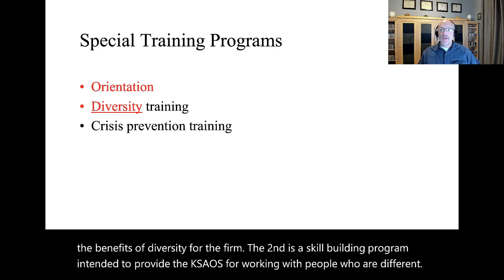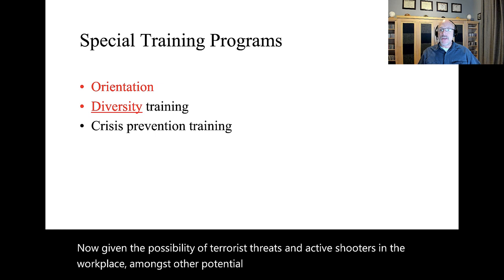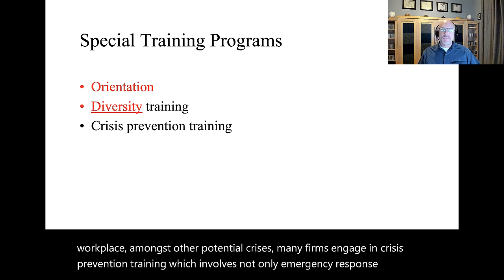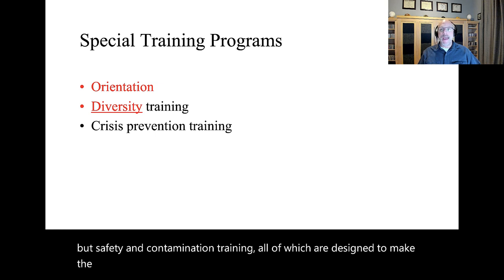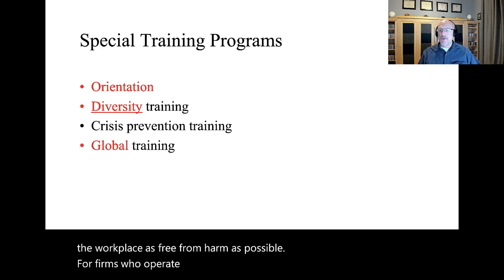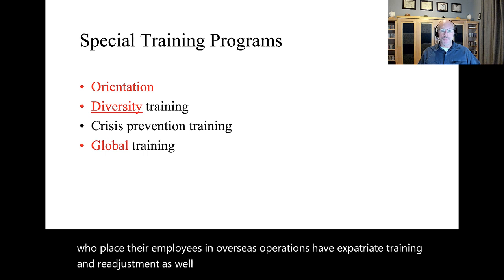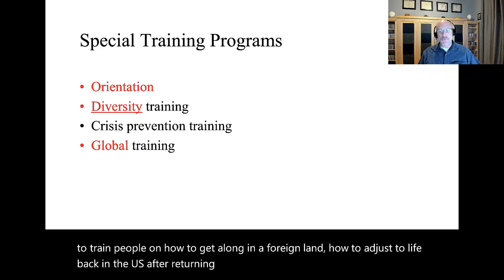Given the possibility of terrorist threats and active shooters in the workplace amongst other potential crises, many firms engage in crisis prevention training, which involves not only emergency response training, but safety and contamination training, all of which are designed to make the workplace as free from harm as possible. For firms who operate abroad, global training is important. Many firms who place their employees in overseas operations have expatriate training and readjustment as well as international protocol courses. It's important to train people on how to get along in a foreign land, how to adjust to life back in the U.S. after returning, and some do's and don'ts regarding living abroad.